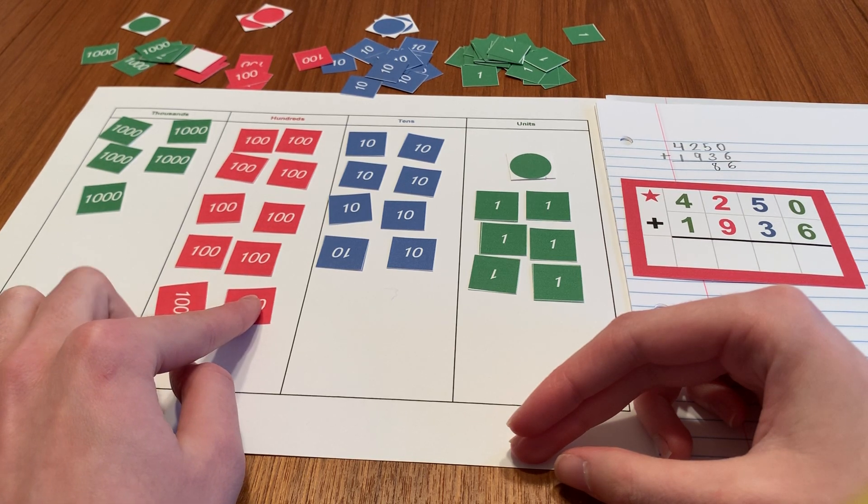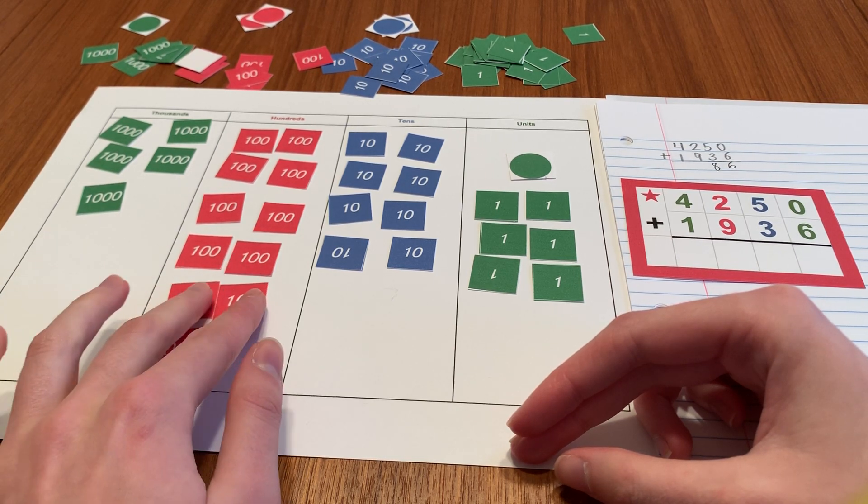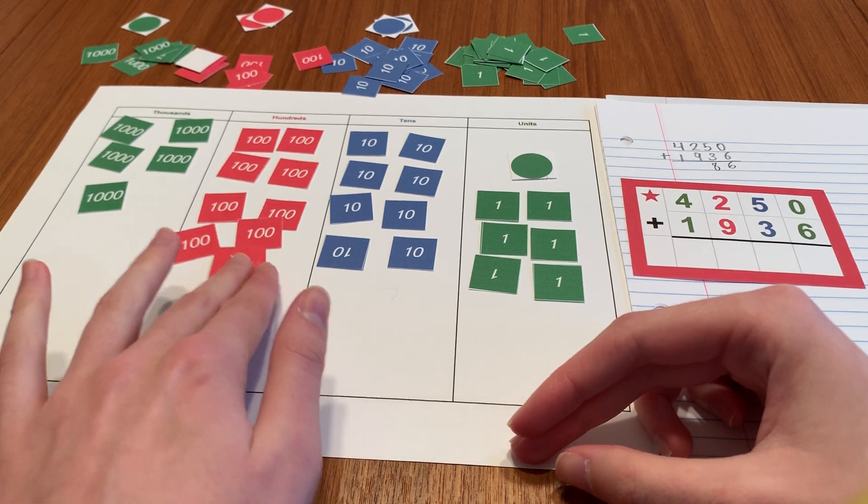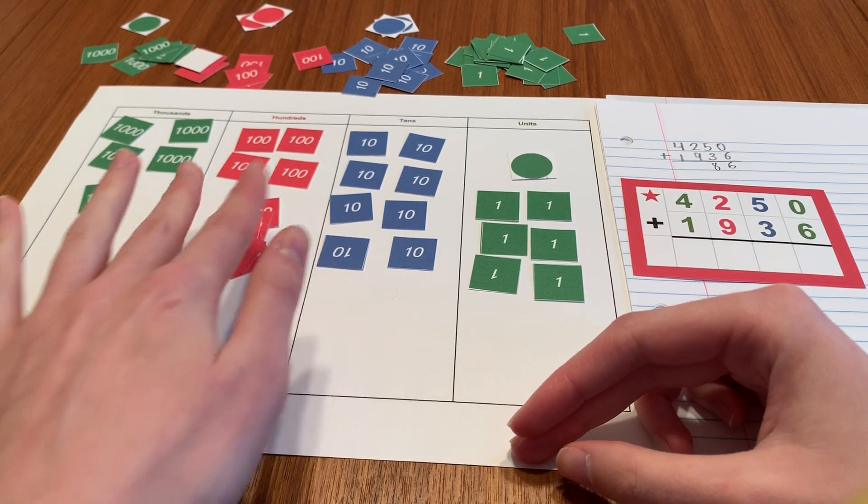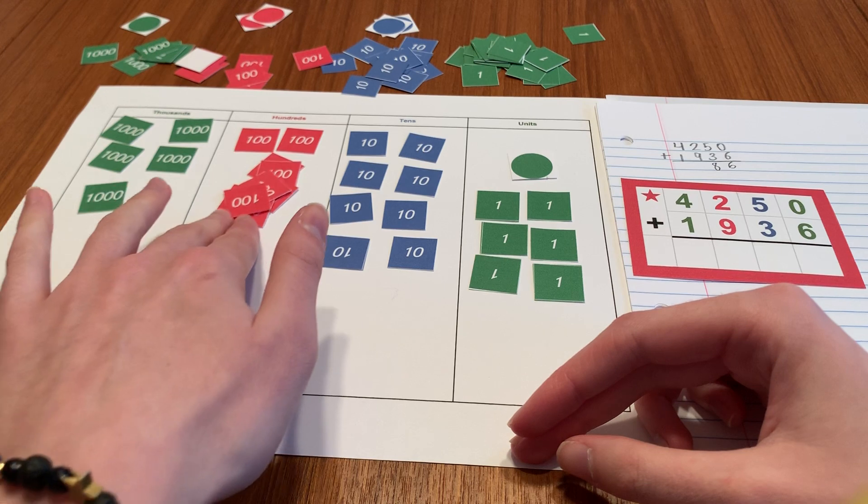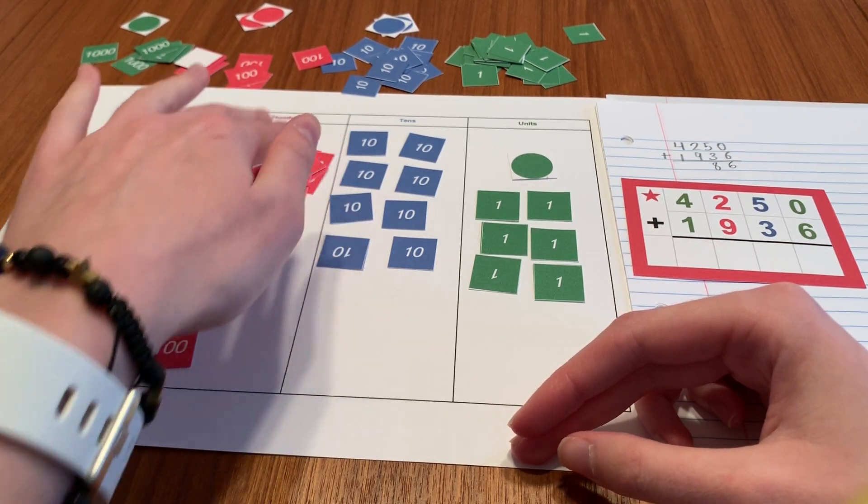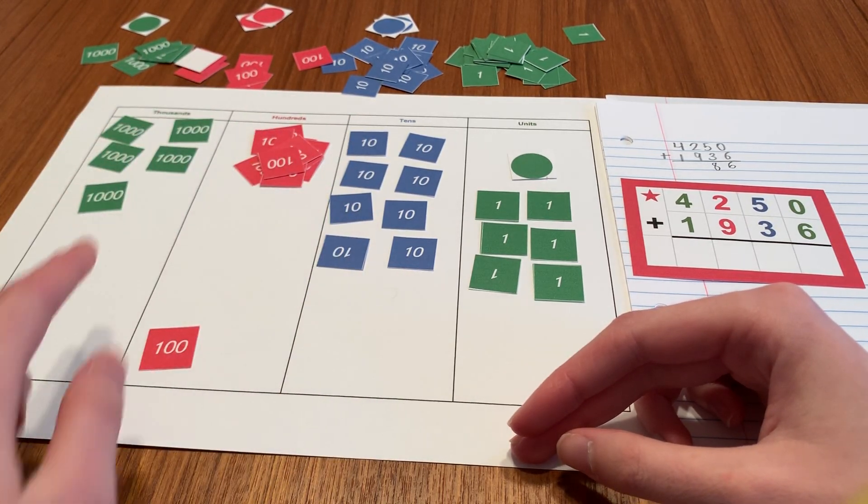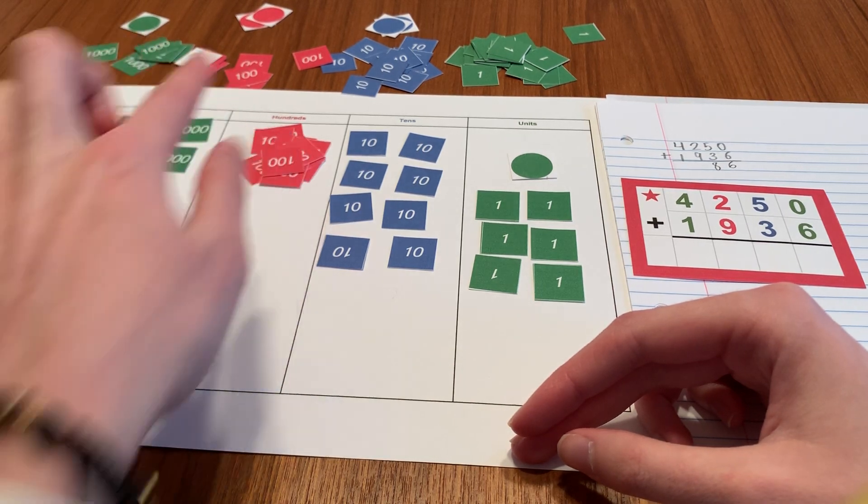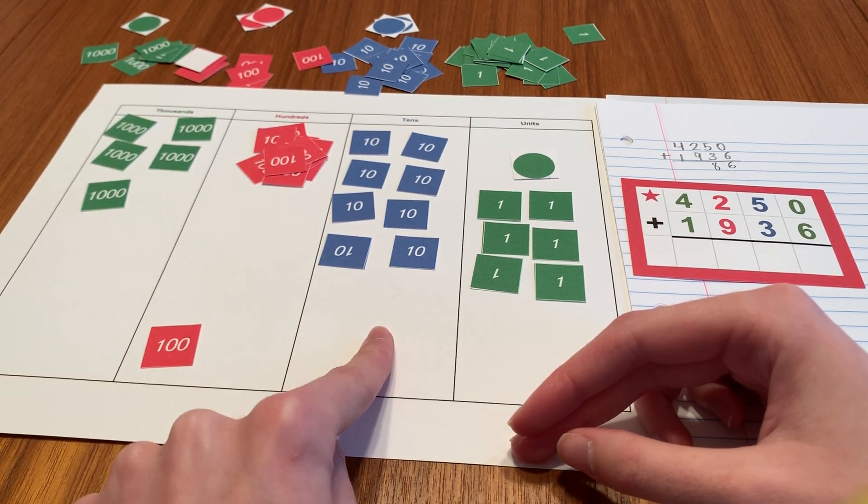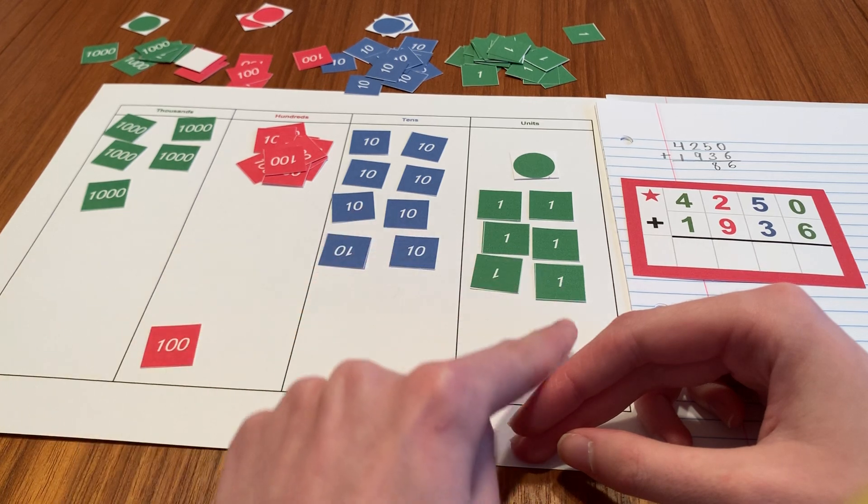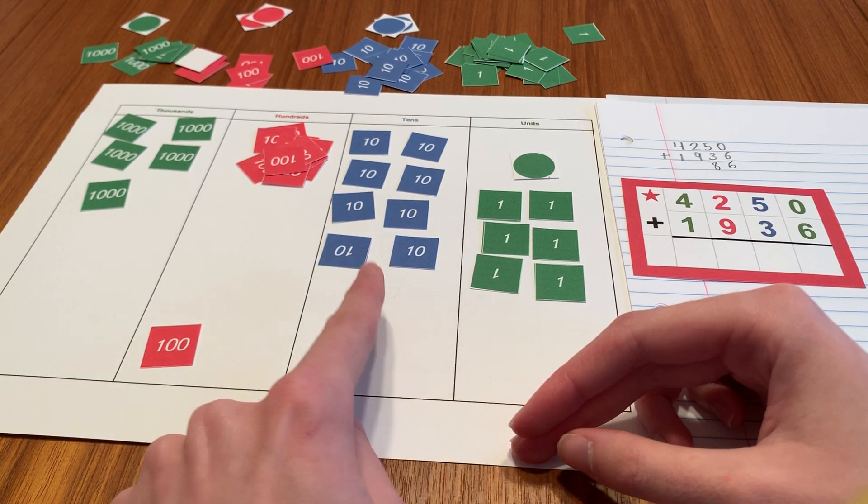So that means it's time to make an exchange. So when I get to ten, I stop and I make one neat pile. And I'm always going to trade it for the number one to my left. So ten hundreds make a thousand. Just like ten tens make a hundred and ten units make a ten.